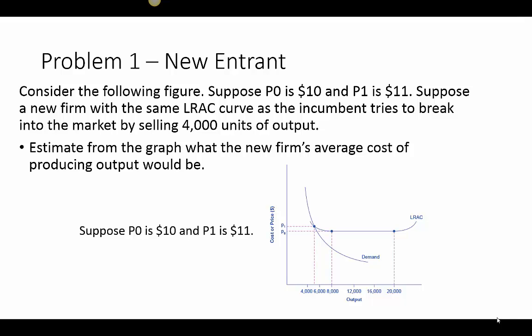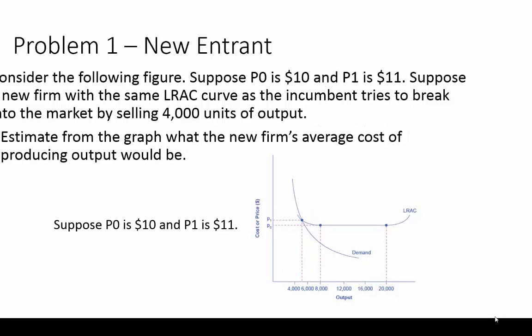We're considering the following figures. Suppose that P0, the price, is $10 and P1, the higher price, is $11. A new firm with the same long-run average cost curve as the incumbent tries to break into the market by selling 4,000 units of output. The question is: what is the new firm's average cost of producing?